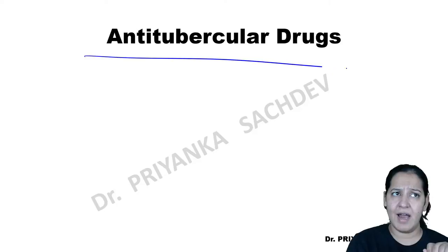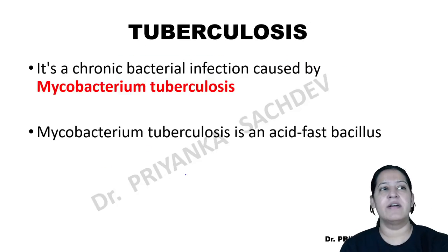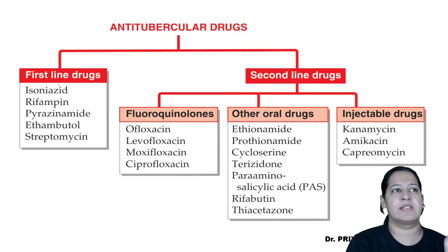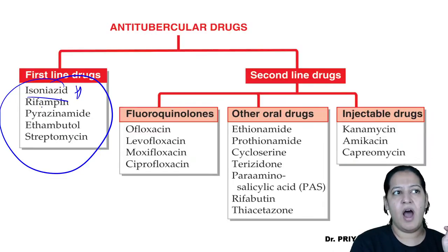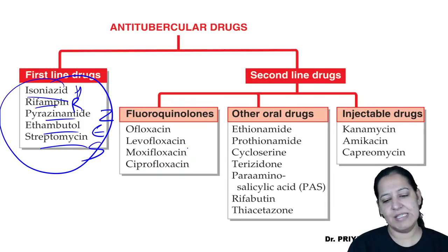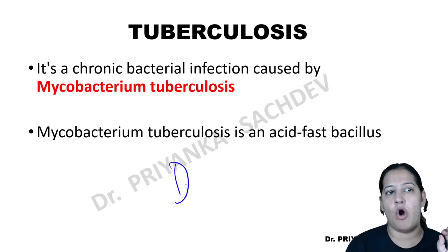In the last lecture, we already covered the five first-line antitubercular drugs: H, R, Z, E, and S. Today, I have to teach you DOTS — directly observed therapy, short treatment.